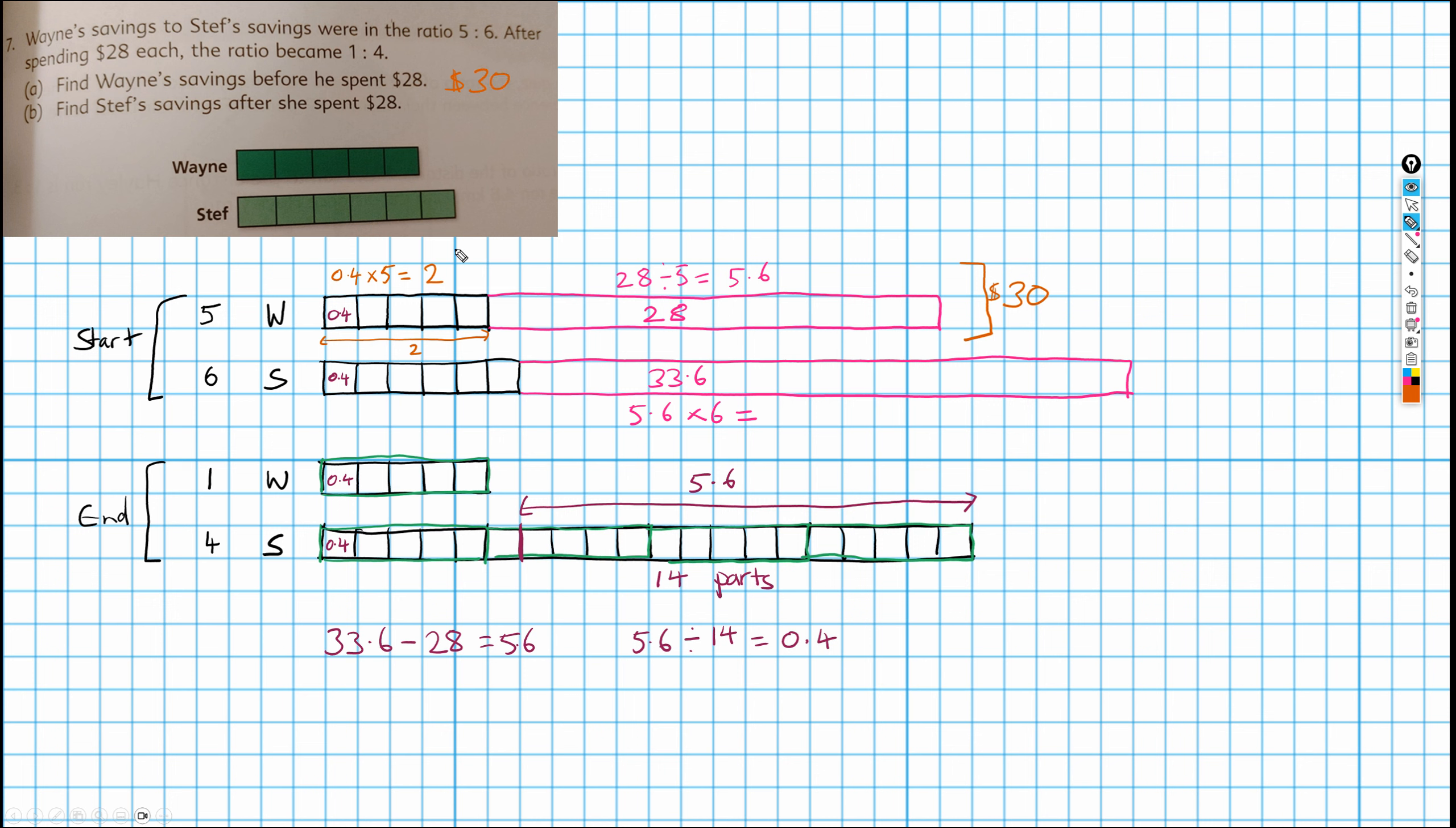And we're asked to find Steph's savings after she spent $28. Well, this represents Steph's savings after she spent $28, which is then 0.4 times 20. So that's how much Steph has left at the end. So this is 8.